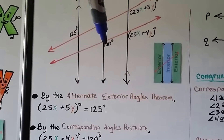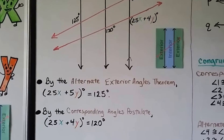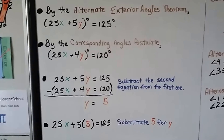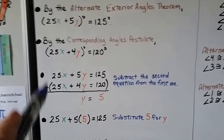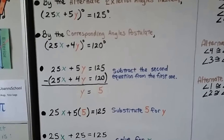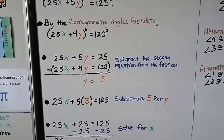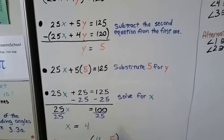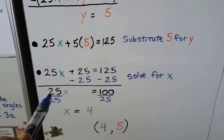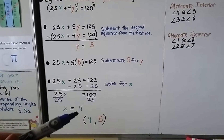Then we look at the second transversal. This angle is 120 degrees and the other is 25X plus 4Y degrees. By the corresponding angles postulate, they are congruent, so 25X plus 4Y equals 120. Now we have two equations. Subtracting the second from the first, 25X cancels, leaving 1Y equals 5. Substituting Y equals 5 back in: 25X plus 25 equals 125, so 25X equals 100, giving X equals 4. Our ordered pair is X equals 4 and Y equals 5.